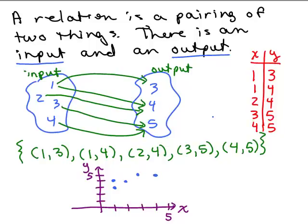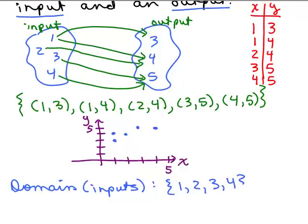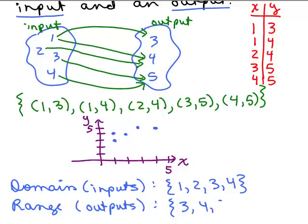So there are four ways to show this particular relation. We call all of the inputs the domain, and we call all of the outputs the range. From this particular picture, if I list the domain — that's the set of inputs — I have 1, 2, 3, and 4. Notice I don't write 1 twice, because it's just a set of numbers and there are only four numbers. And for my range — that's the set of outputs — all I have is 3, 4, and 5.